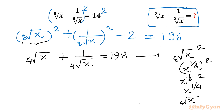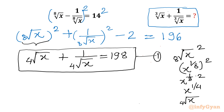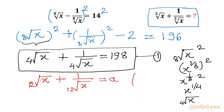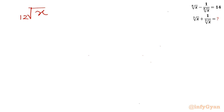Now I will write 12th root of x plus 1 over 12th root of x, and suppose this equals a. I will consider cubing this equation and utilize equation number 1. Let's see how it works.